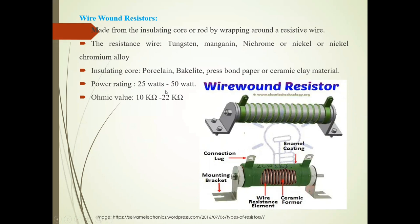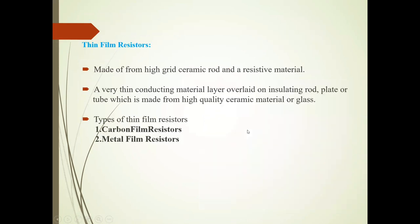The power rating of wire wound resistors is 25 watt to 50 watt, and the ohmic value is 10 ohms to 22 kilohms. Now, thin film resistors are made from high-grade ceramic rod and resistive materials, with a very thin conductive material layer overlaid on an insulating rod, plate, or tube made from high-quality ceramic materials.